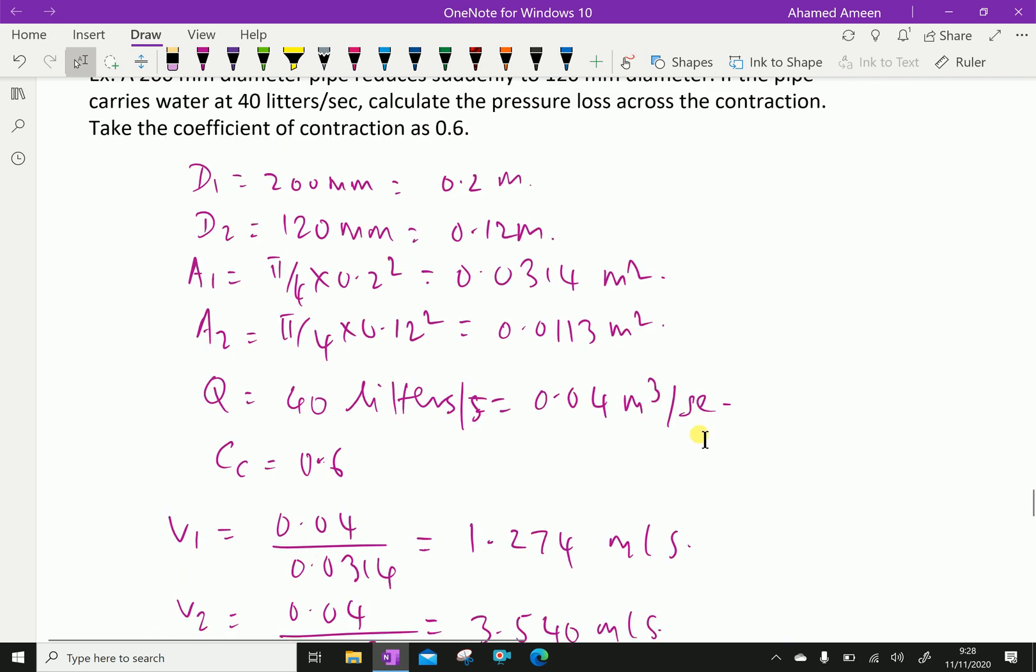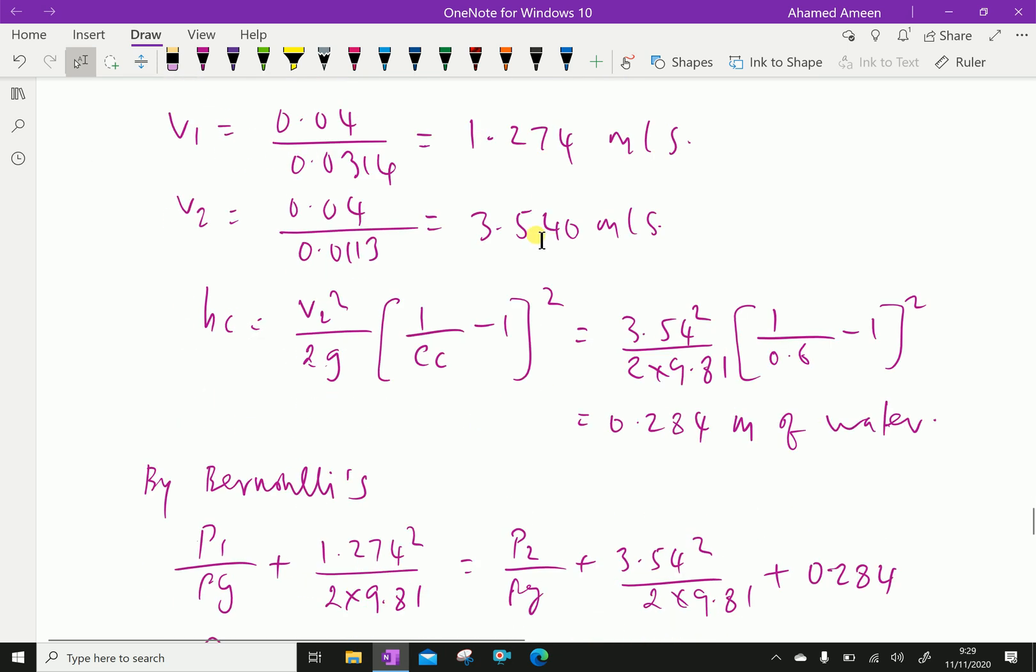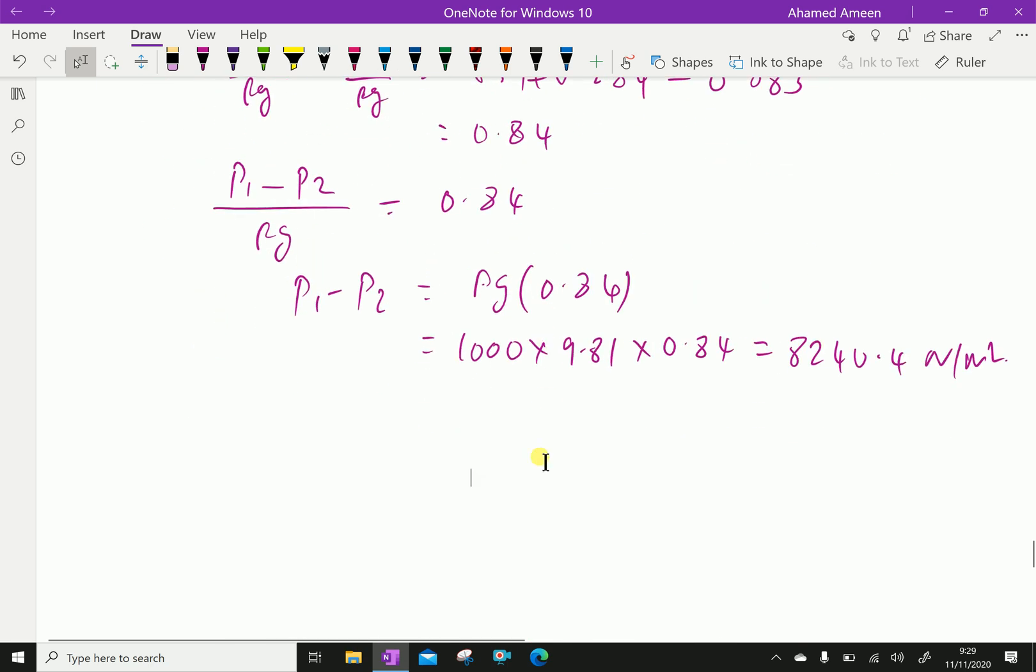P1 minus P2 equals 8240.4 Newton per meter square or 0.82404 Newton per centimeter square.